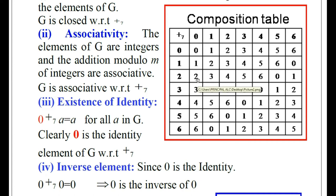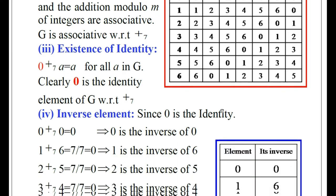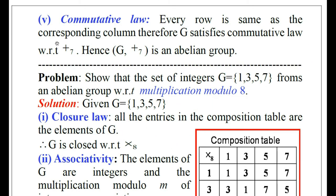Similarly, the remaining corresponding rows and columns are exactly the same. Therefore, every row is the same as the corresponding column in the composition table. Therefore, G satisfies commutative law with respect to addition modulo 7. Thus, G satisfies all five axioms: closure, associative, identity, inverse, and commutative. Therefore, the algebraic structure G together with addition modulo 7 is an abelian group.